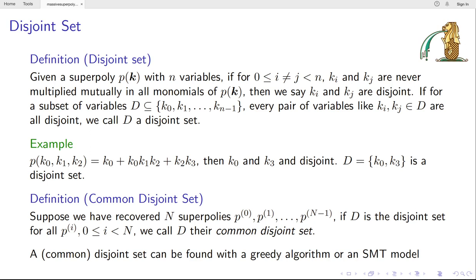And an example is here. You can see k_0 and k_3 are never multiplied brutally. So we say k_0 and k_3 are disjoint and the set containing k_0 and k_3 is a disjoint set.